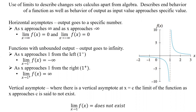As x approaches 1 from the left, we write a negative superscript after the 1. If we approach from the right, we write a positive superscript. As x approaches 1 from the left, we go to negative infinity; and as we approach from the right going to 1, we go to positive infinity.